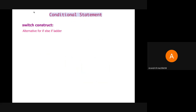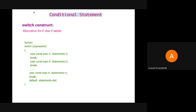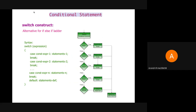Next is a switch construct. A switch construct can be used as an alternative for the if-else-if ladder. The syntax is: we mention the keyword switch with an expression within parentheses, and within a block we mention different cases with the values of the expression. Finally, it's important to mention a default case, which is analogous to the else part in the if-else-if ladder. As shown in the flowchart, first case one is checked; if satisfied, statement one gets executed. If not, it moves on to case two, case three, and if all cases fail, the default statement gets executed.